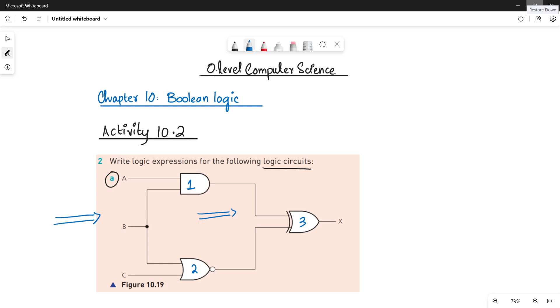The second thing you have to do is identify the different gates. Logic gate number 1 is your AND gate. Logic gate 2 is your NOR gate, and logic gate 3 is your XOR gate.